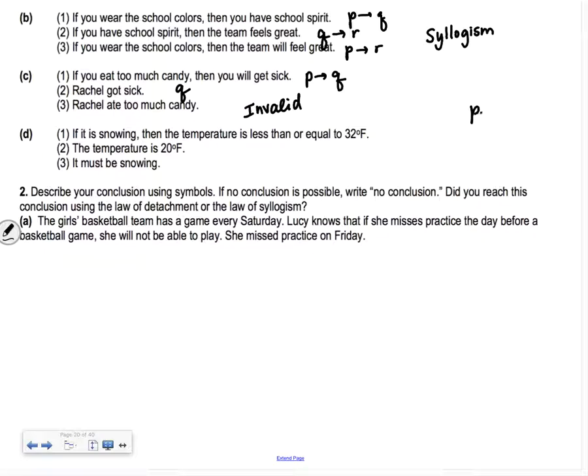The detachment was always P implies Q, and then the next thing was P. If it is snowing, then the temperature is less than or equal to 32 degrees Fahrenheit. The temperature is 20 degrees Fahrenheit. That's the Q, it's not P. So it doesn't necessarily have to be snowing. Just because it's 20 degrees Fahrenheit doesn't mean it's snowing. So this is invalid.